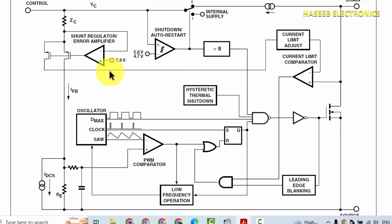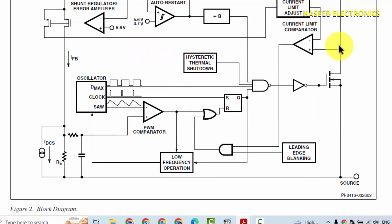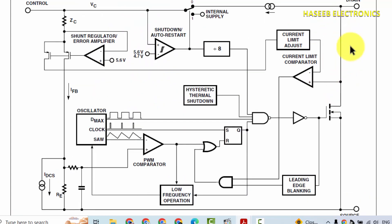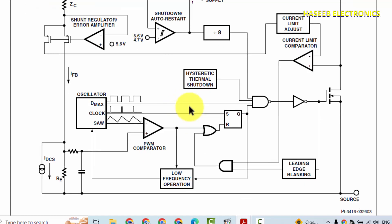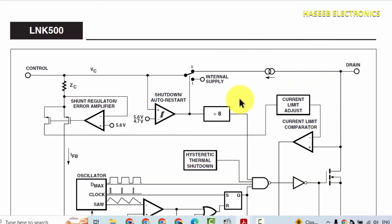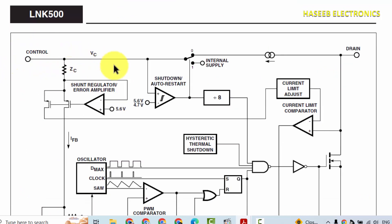There is a current limit protection circuit that will monitor the current. This IC can be used in constant current mode or constant voltage mode. To use it in constant voltage mode, optocoupler output can be connected to this control pin, and it will start to work in constant voltage mode.